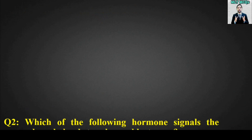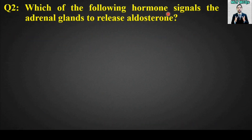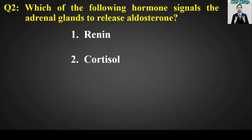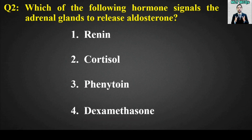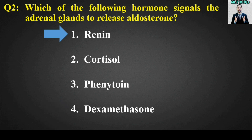MCQ number 2: Which of the following hormones signals the adrenal glands to release aldosterone? Options are: renin, cortisol, phenythine, or dexamethasone. The right answer is option number 1. Renin is the hormone that signals the adrenal glands to release aldosterone.